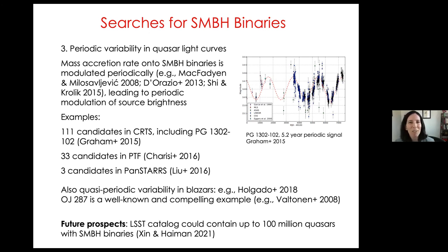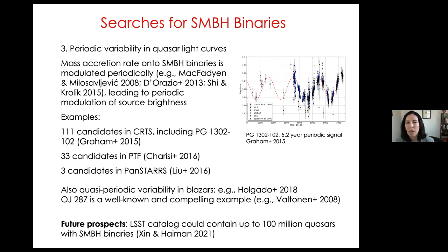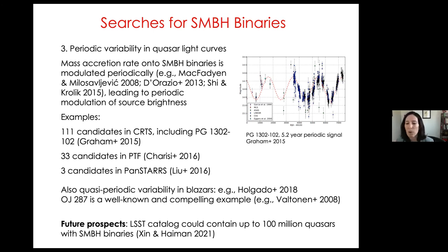The interesting thing about OJ 287 is the long time baseline of data: the first data points go back to the 19th century, tracked over many orbital periods, making it a strong binary candidate. The issues with these periodic signatures are that they can also be produced by non-binary effects like jet precession, hot spots in the accretion disk, or warped disks, so more monitoring is required. The most promising future prospect is the LSST Quasar Catalog, where 20 to 100 million supermassive black hole binary candidates could be found through periodic light curves.